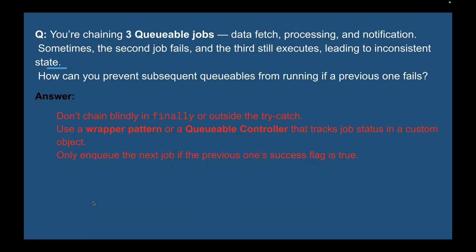You are chaining three Queueable jobs — data fetch, processing, and notification — but sometimes the second job fails while the third still executes, leading to an inconsistent state. The answer: don't chain blindly in a finally block or outside the try-catch. Use a wrapper pattern or Queueable controller that tracks job status in a custom object, and only enqueue the next job if the previous one completed successfully.